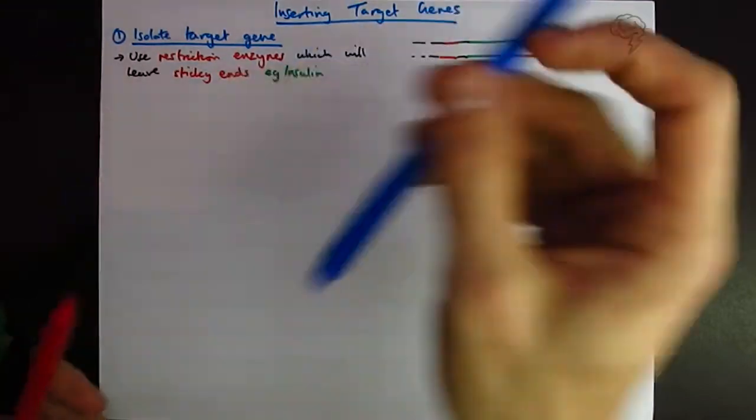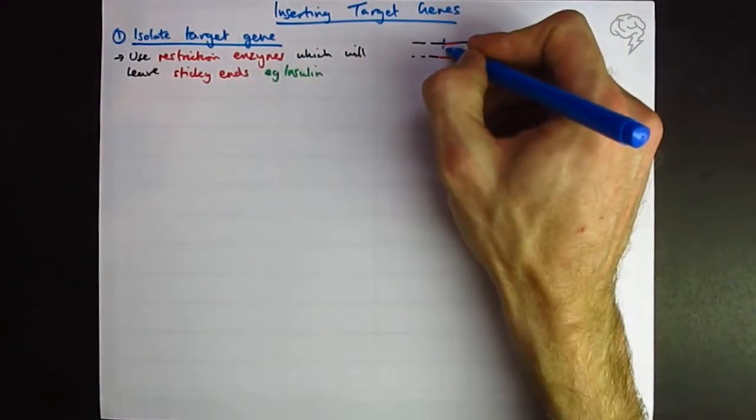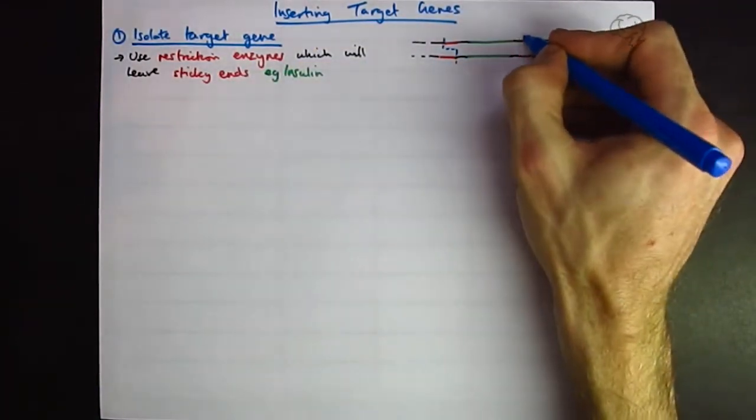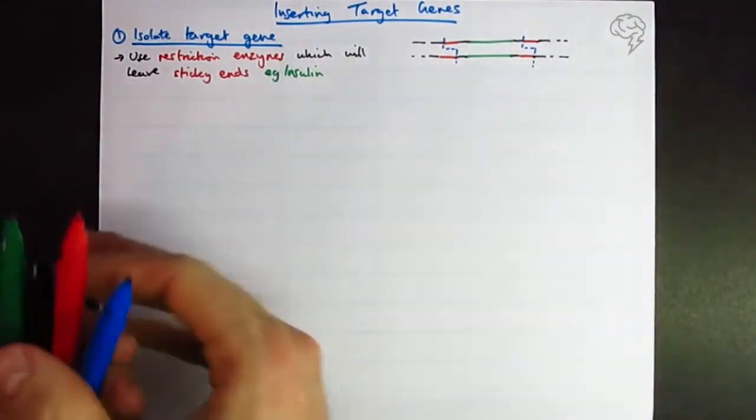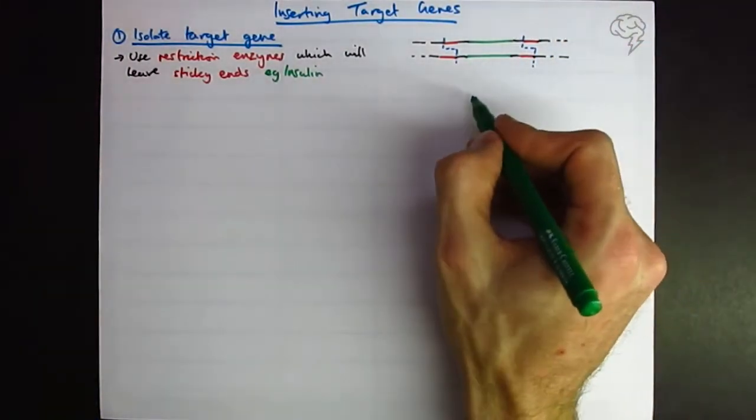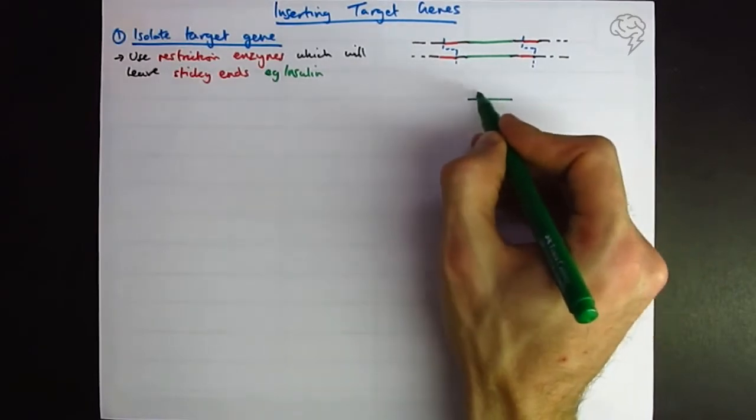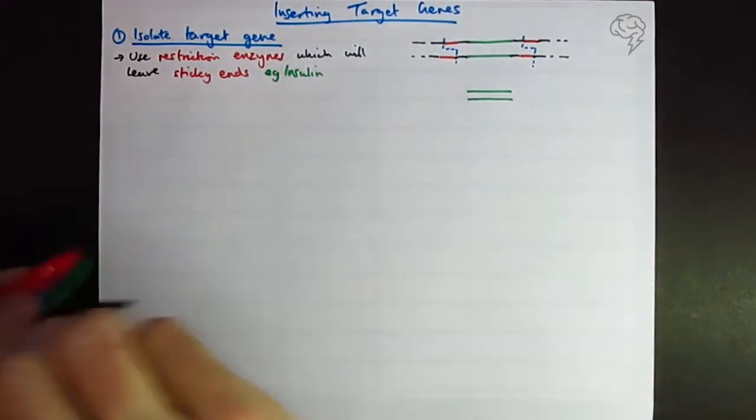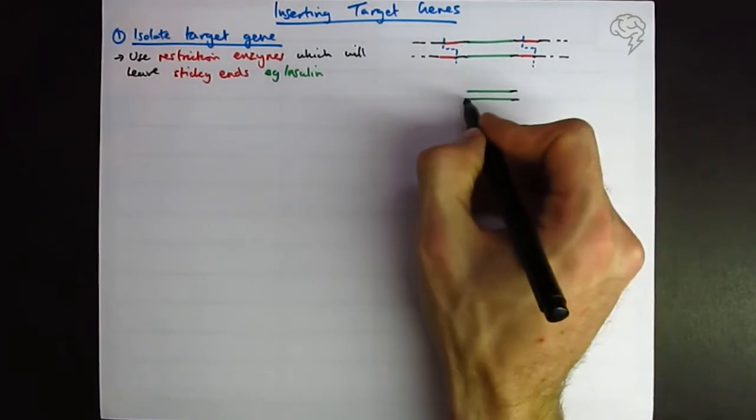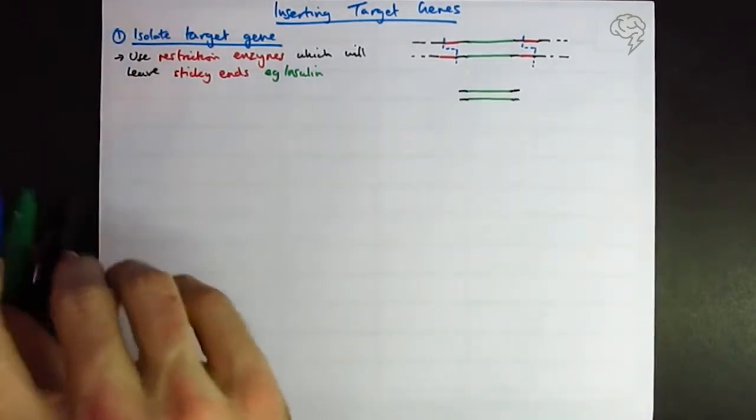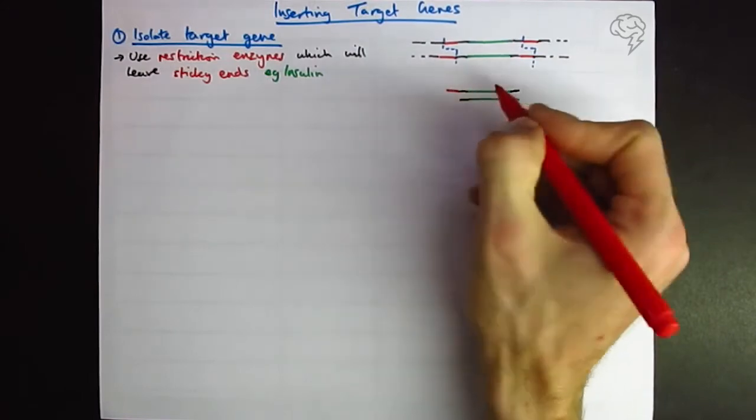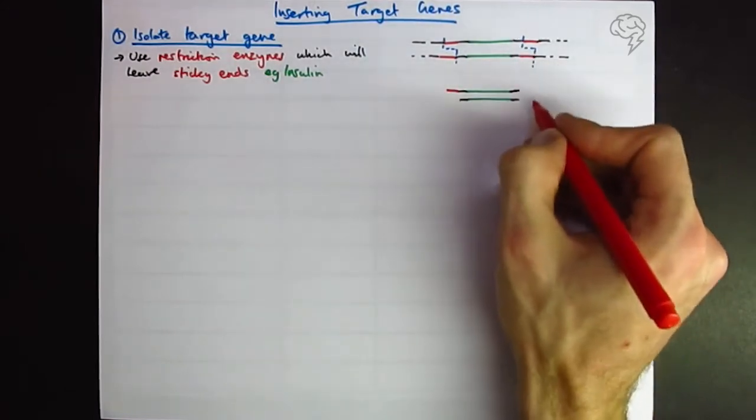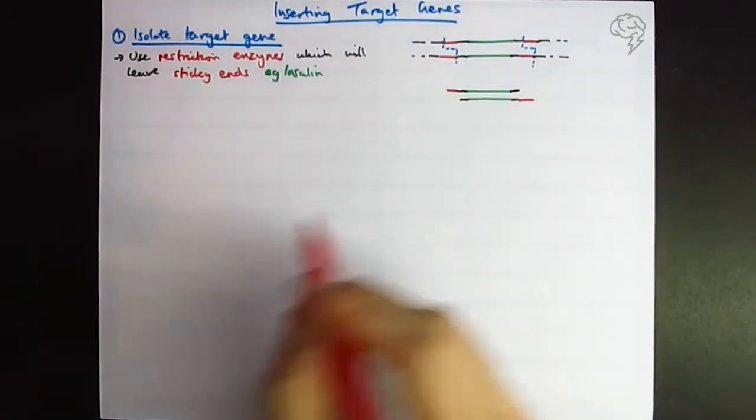Okay, so once we use our restriction enzyme, remember it doesn't cut in a samurai chop straight line. You get this ziggity-zaggity step. And then once we've isolated our gene, it's going to look, try and keep everything nicely in line if you can. It just makes a bit more sense when you look at it. So we've got this top section being included. That gives us our sticky end on the top. And then we've got our sticky end on the bottom there.